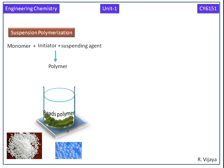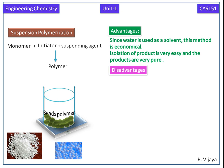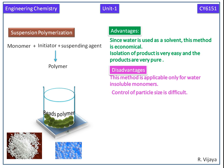The advantages of suspension polymerization are: since water is used as solvent, this method is economical. Isolation of the product is very easy and the products are very pure. The disadvantages are that this method is applicable only for water insoluble monomers, and control of particle size is difficult.